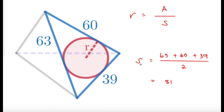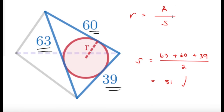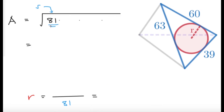The semiperimeter is easily found now that we have the three sides: 39, 60, and 63 — add them and divide by 2 to get the semiperimeter equal to 81. For the area, we use Heron's formula: the square root of s times (s minus a) times (s minus b) times (s minus c), where a, b, c are the three sides. So we compute the square root of 81 times (81 minus 63) times (81 minus 60) times (81 minus 39), which is the square root of 81 times 18 times 21 times 42.